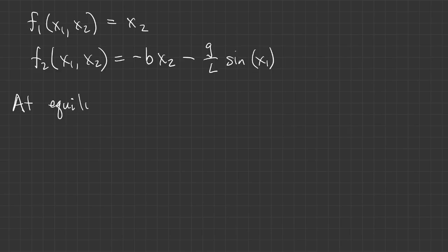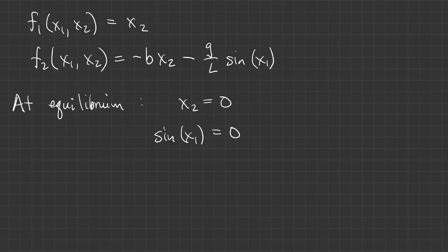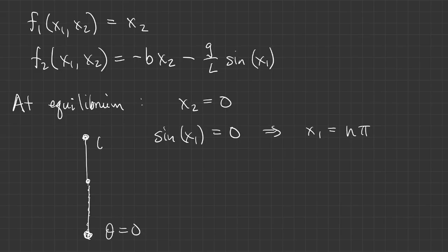At an equilibrium point, both functions must be zero simultaneously. The first equation tells us X2 must be zero, and the second tells us sine of X1 is zero, which means X1 is an integer multiple of pi. So it looks like we have infinitely many equilibrium points. But physically, theta is an angle measured from the straight-down position: theta equals zero is straight down, theta equals pi is straight up, two pi is straight down again, and so on. So there are only two physically distinct equilibrium points.